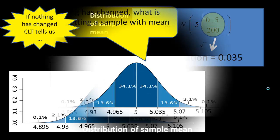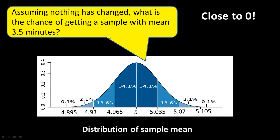You can say with a lot of confidence that because you got a sample mean of 3.5, something really has changed — it's very unlikely this happened by accident. However, you can never say with 100% confidence, but this comes as close to 100% as you can have. That's just an idea of how the Central Limit Theorem and the normal distribution play a role in statistics, though we won't use this idea heavily in the rest of the course.